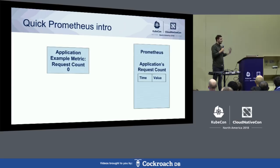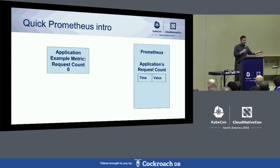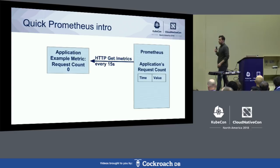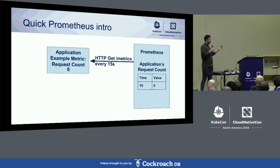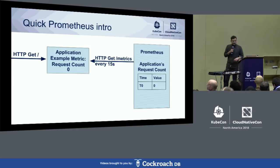We have an HTTP endpoint on our application that exposes these metrics and we instrument our application to, whenever something happens, increment our metrics. Prometheus comes every 15 seconds — that's the default, but it's configurable. Whatever our application returns, we add the timestamp to it and write it into our internal time series database. In this case our process hasn't actually received any traffic so the request count was zero.